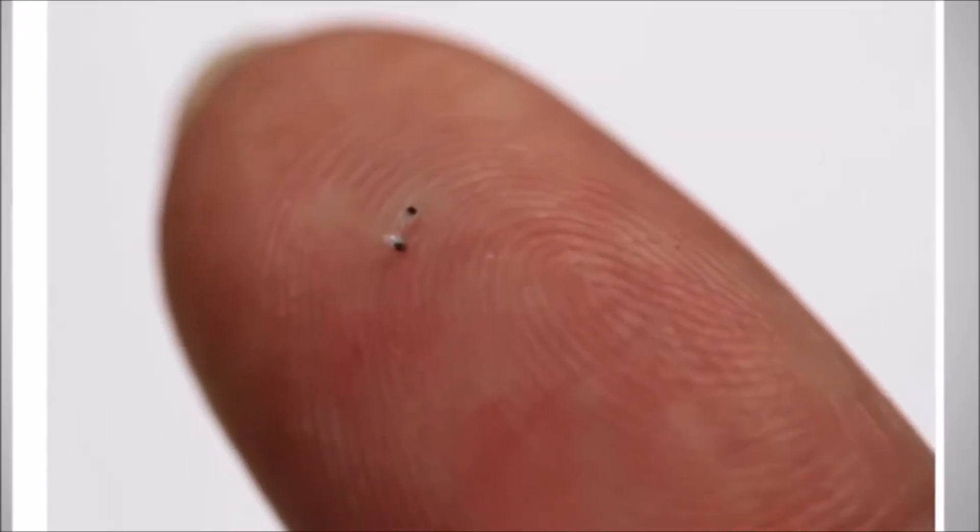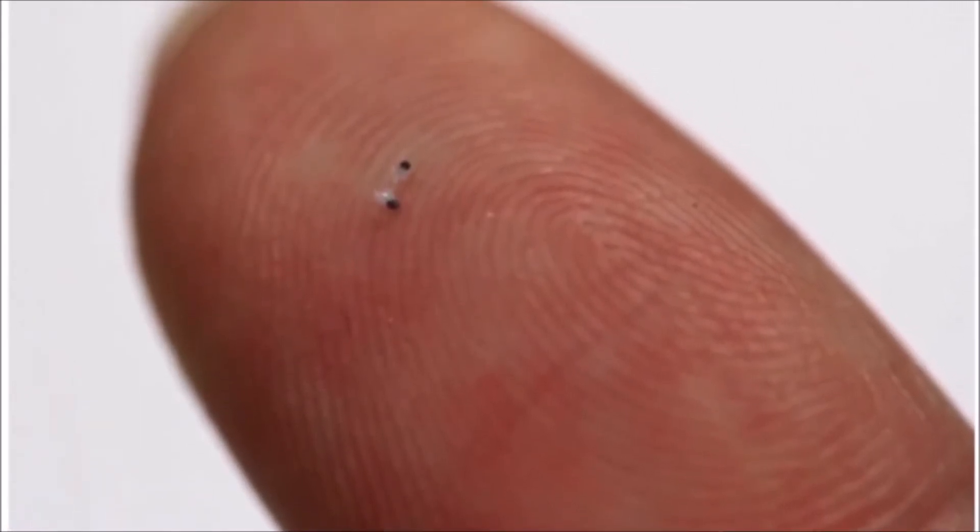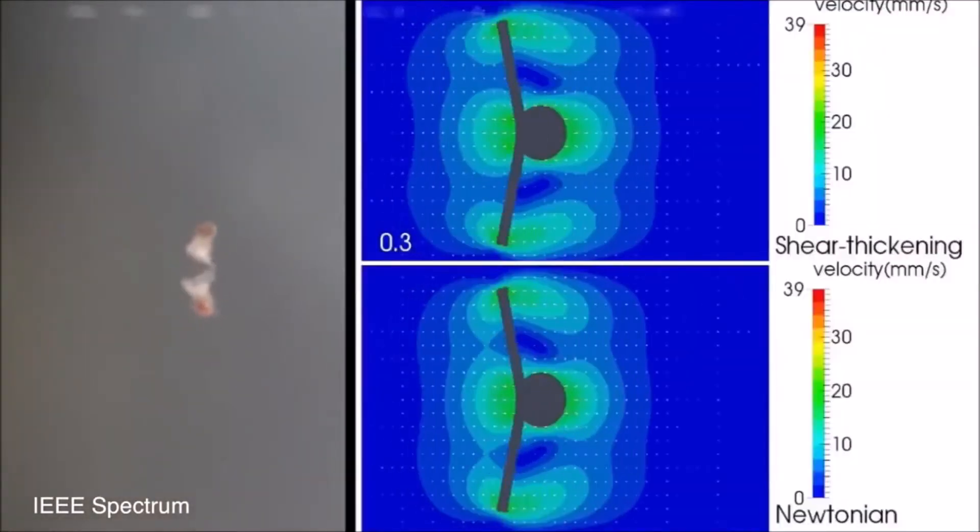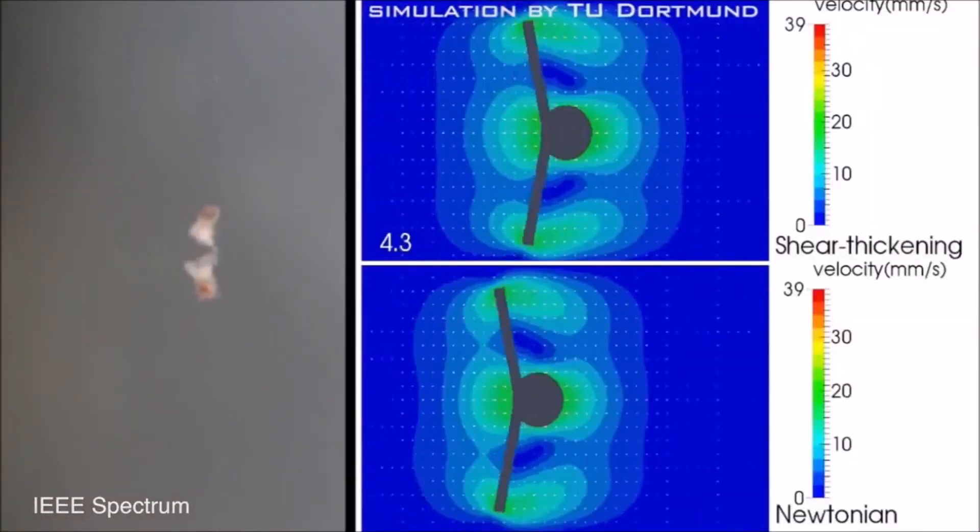Number 8. Microscallops. These itsy-bitsy swimmers are designed to navigate the body's various liquids like blood and eyeball gunk. Thanks to the unique nature of bodily fluids, these little guys may someday be able to deliver medications to exactly where they're needed.